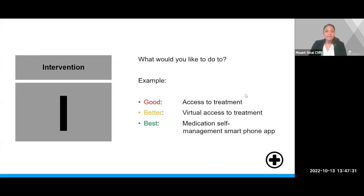I — this stands for intervention. What is it that you would like to do? An example would be providing access to treatment, but that is quite broad. Virtual access to treatment would be better, but even that can be written more concisely. The best option would be a specific type of virtual access to treatment — for example, a medication self-management smartphone app.